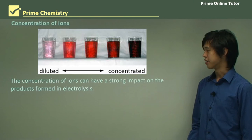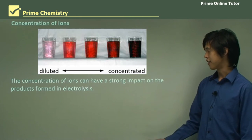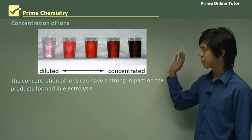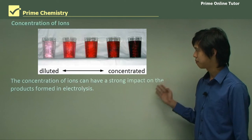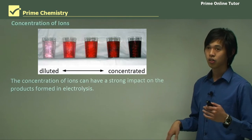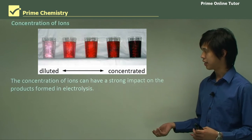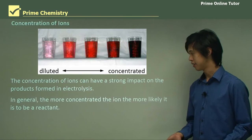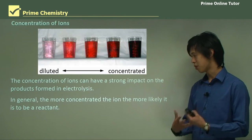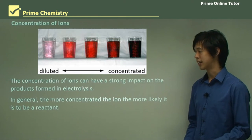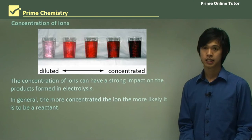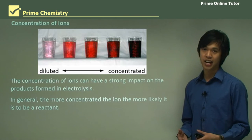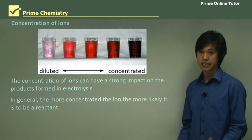Regarding concentration of ions: the concentration of ions can have a strong impact on the products in electrolysis. Whether you have dilute or concentrated solutions will determine a lot about your electrolysis. In general, the more concentrated the ion, the more likely it will be a reactant. So the more ions you have, the more likely they will participate in the electrolysis.